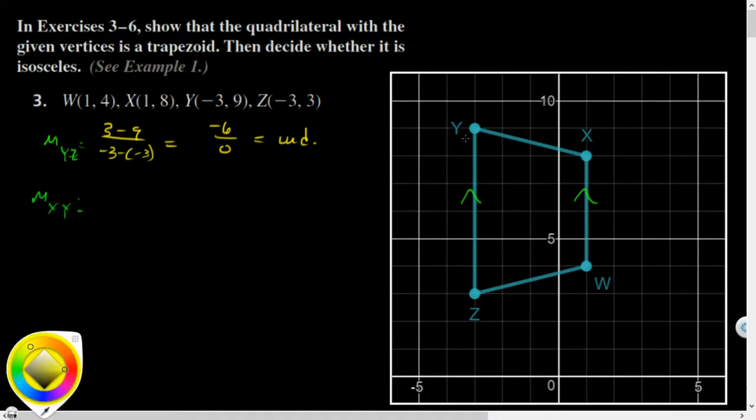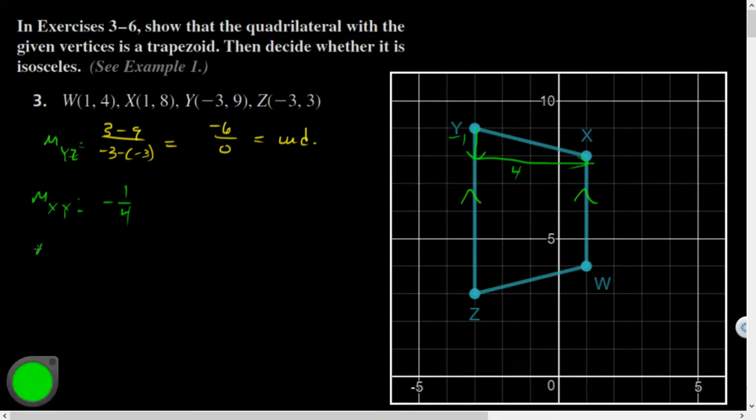So, the slope of XY. Yeah, this one we'll do graphically. So, this looks like down 1 over 4. Right, so that's negative 1 fourth. The slope of ZW or WZ is up 1 over 4. And notice that those are not the same, so those are not parallel. So, it is, conclusion, a trapezoid.